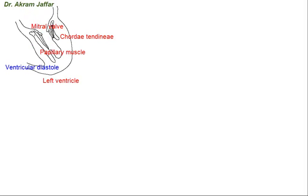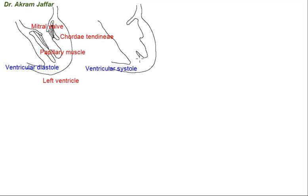Now let's draw a similar section of the left ventricle during ventricular systole. This is the posterior cusp of the mitral valve, the posterior papillary muscle, the septal or anterior papillary muscle, the interventricular septum, and the anterior or septal cusp of the mitral valve. You can see the cusps here are closed. This is during ventricular systole.